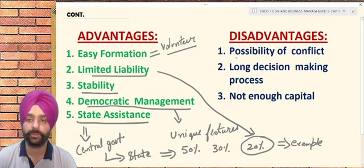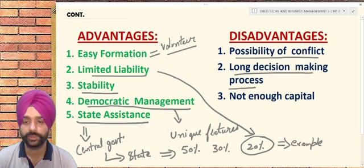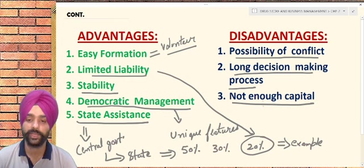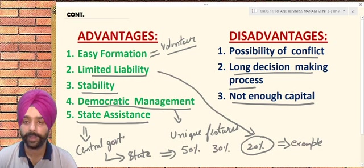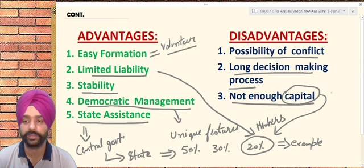The disadvantages of a cooperative society include: possibility of conflict, because in a democratic form of management there can be conflicts; long decision-making processes; and not enough capital. Although state and central governments usually support such organizations, the initial working capital is generally invested by the members themselves, and if sufficient capital is not generated, the organization may lose its existence.